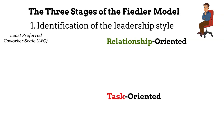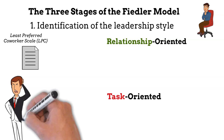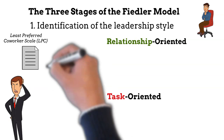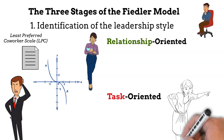Which style a leader uses is established by a questionnaire with 18 questions with opposite answers. The leader thinks of the least preferred team member and answers questions with a scale from 1 to 8, ranging from unpleasant to pleasant, or unfriendly to friendly, or similarly. A high score on the LPC scale means that the leader is pleasant and nice to work with, and therefore assumed to be a relationship-oriented leader. A low score means that the leader is difficult and cares less about people, indicating that the leader uses a task-oriented leadership style.